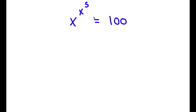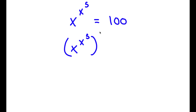Alright, so I have x to the power of x to the power of 5 is equal to 100. Now the first thing I'm going to do is take both sides to the power of 5. So now I have x to the power of x to the power of 5 to the power of 5 is equal to 100 to the power of 5.